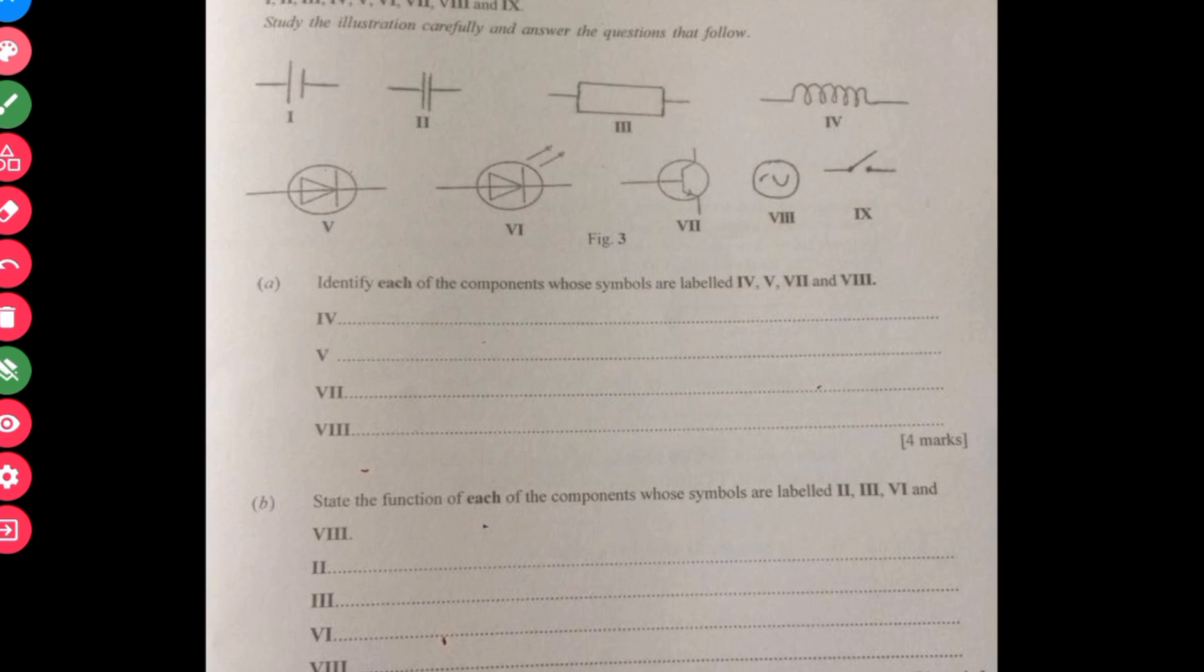You have different electrical components, electrical circuit components and then you're expected to name them, each of them. You are just asked to identify, not all of them. Identify IV, V, VI, VII and VIII. This is why it's important to read instructions because I missed it.